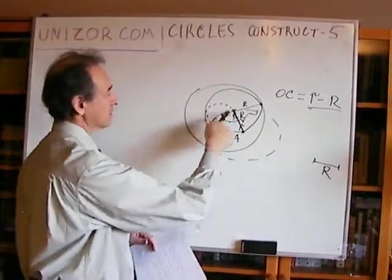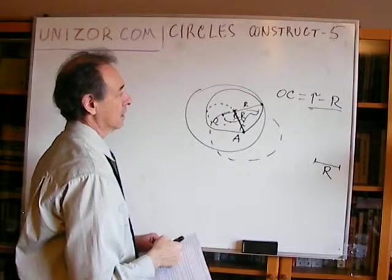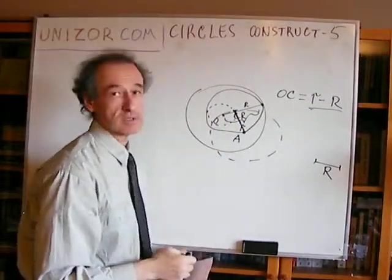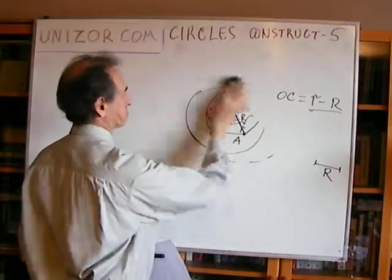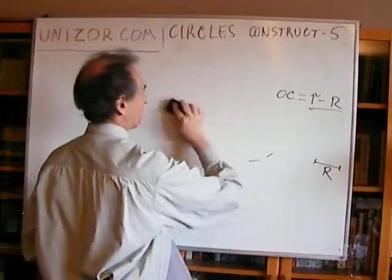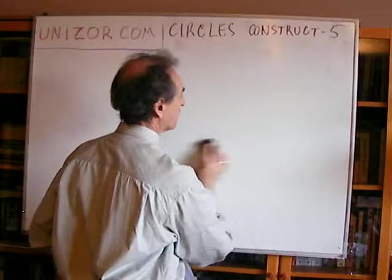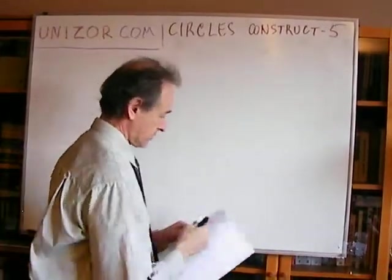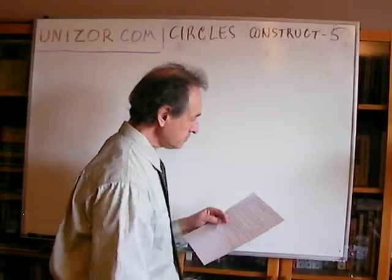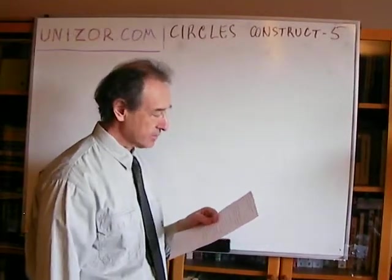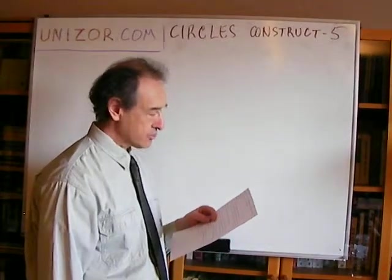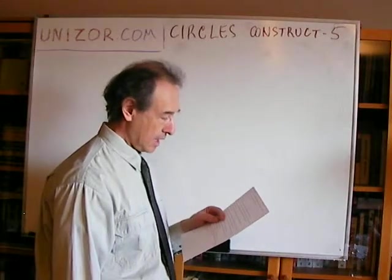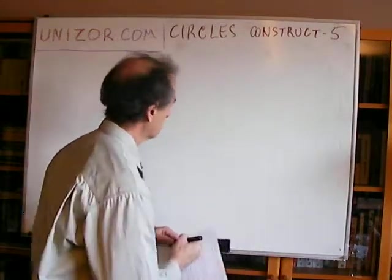The intersection of these two circles gives two different points usable as centers. So all three variations of this problem are solved. Next: construct a circle of a given radius tangential to a given straight line and tangential to a given circle.